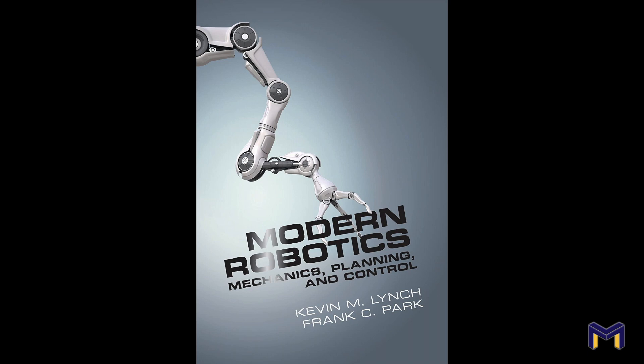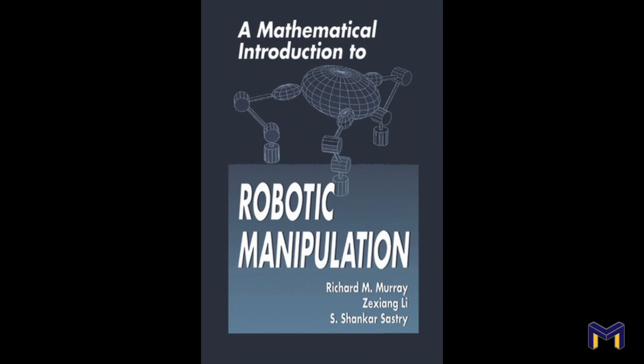The textbooks used are Modern Robotics: Mechanics, Planning and Control by Frank Park and Kevin Lynch, and A Mathematical Introduction to Robotic Manipulation by Murray, Lee and Sastry. The second book is a little bit advanced and it's usually used in advanced courses like in graduate school, but I will try my best to make these concepts as easy as possible for you to understand.